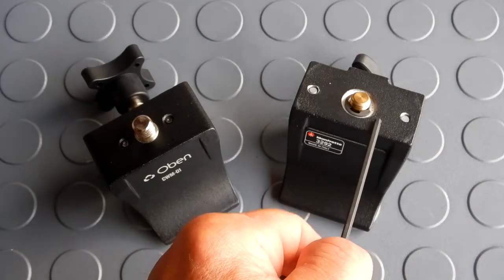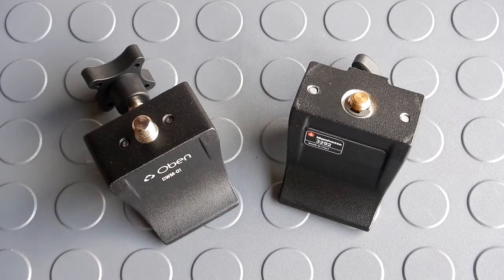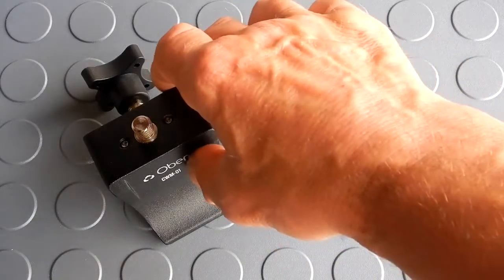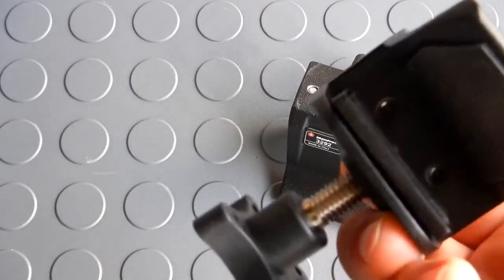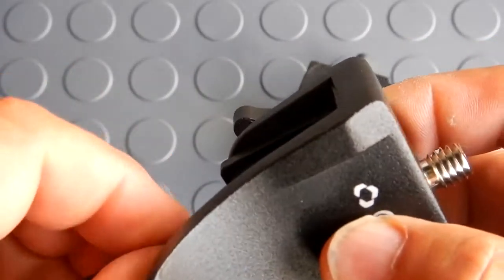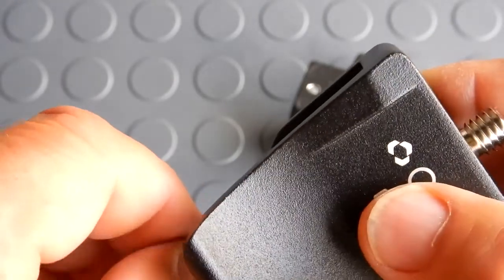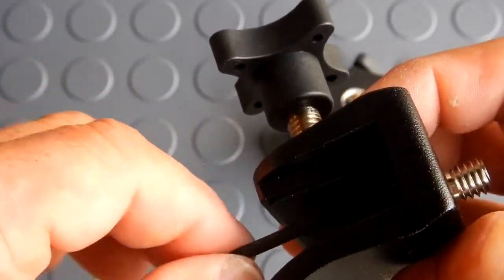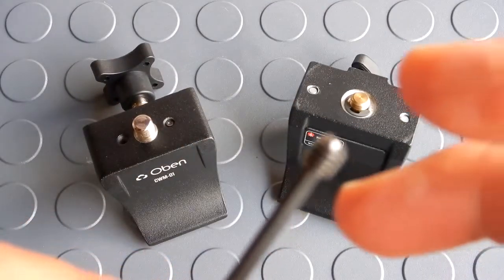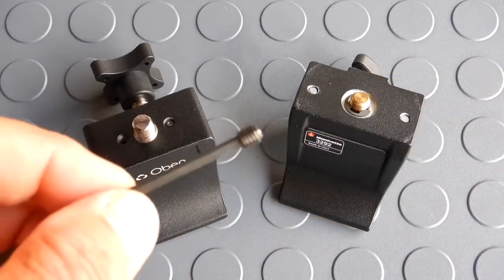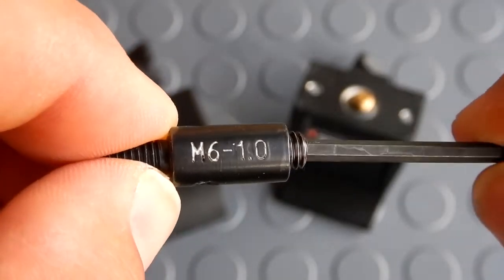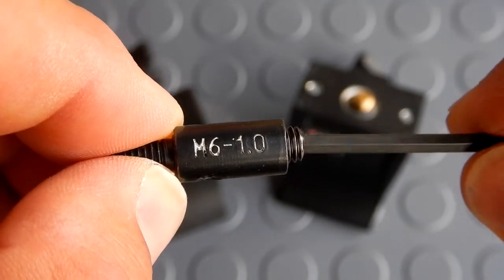Speaking of those lockdown bolts, the Oban has allen head set screws that they use and they actually do give you an allen head or an allen wrench with this. But I like to use my Bondus - I like my Bondus better so I'm using my Bondus allen wrench. Now on the Oban, for some reason if you were to lose that set screw, it is an M6 by 1.0 pitch.